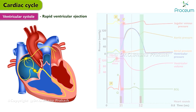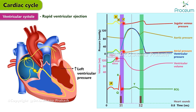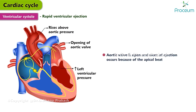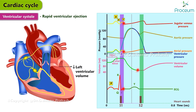Rapid ventricular ejection. By the end of isovolumetric contraction, left ventricular pressure rises above aortic pressure, causing the aortic valve to open. This defines the beginning of ventricular ejection. The aortic valve is open and most ejection occurs due to the apical beat; however, aortic valve opening occurs after pulmonic valve opening, so isovolumetric contraction is longer in the left ventricle. Left ventricular volume decreases rapidly, and aortic pressure rises rapidly as the rapid ejection of blood into the aorta exceeds peripheral drainage.